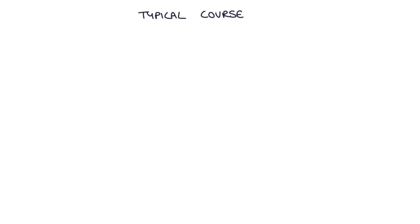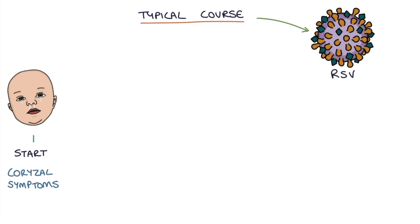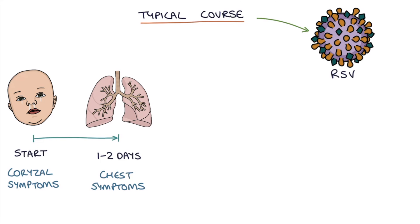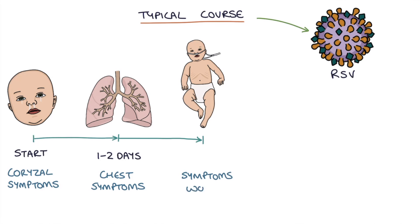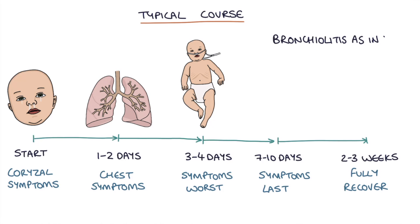The typical course of bronchiolitis caused by RSV usually starts as an upper respiratory tract infection with corysal symptoms. Around half of babies will get better spontaneously; the other half develop chest symptoms over the first 1-2 days following onset of the corysal symptoms. Symptoms are generally at their worst on day 3 or 4, usually last 7-10 days in total, and most patients fully recover within 2-3 weeks. Children who have had bronchiolitis as infants are more likely to have viral-induced wheeze during childhood.